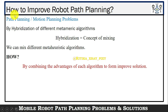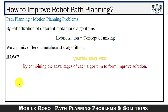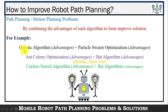The last question is: how to improve robot path planning? The answer is by hybridization of different meta-heuristic algorithms. Hybridization means the concept of mixing — combining the advantages of each algorithm for an improved solution. For example, we can combine genetic algorithm advantages with particle swarm optimization, ant colony optimization advantages with bat algorithm, and cuckoo search algorithm advantages with bat algorithm to improve robot path planning.